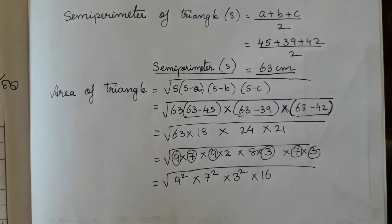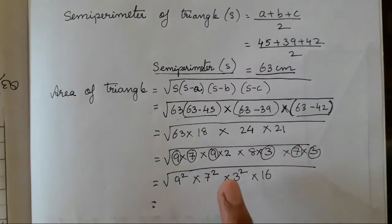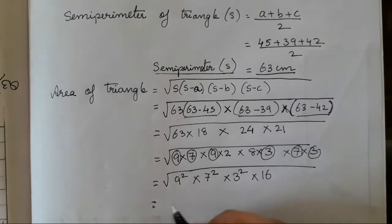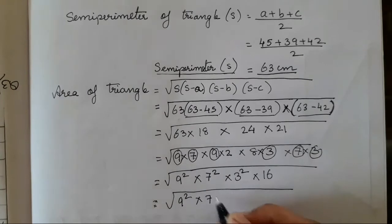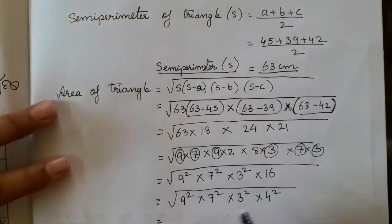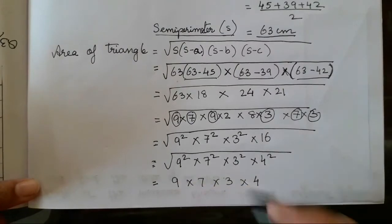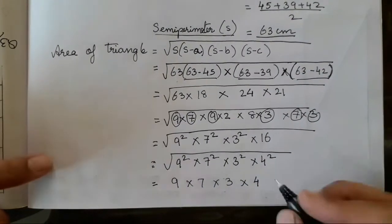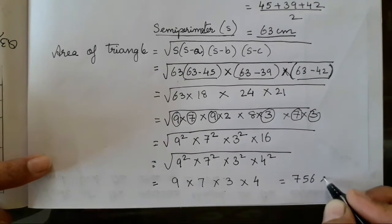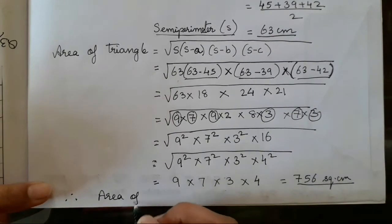16 = 4², so now all numbers have squares: 9², 7², 3², 4². When we remove the square root, we take 9 × 7 × 3 × 4, which makes it easy to multiply after removing the squares. The answer is 756 square centimeters. Since it's an area, the unit is square centimeters. Area of triangle = 756 sq cm.